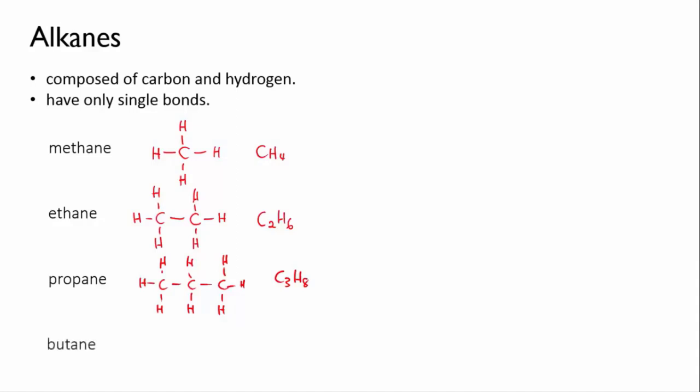And next is butane, four carbons. Fill them up with hydrogens, and that gives you C4H10. Now the alkane series continues. Each time you add one carbon to the molecule, and you fill up the remaining bonds with hydrogen, the molecule gets longer and longer.